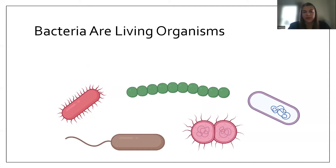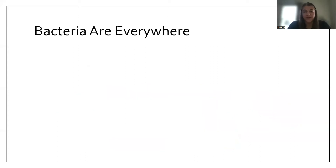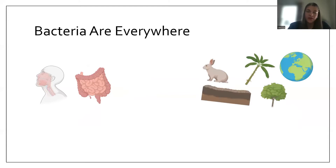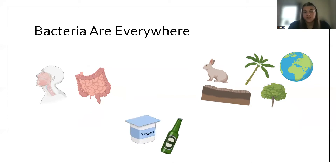Bacteria can be everywhere. They can live with and without oxygen, depending on the type, and some can live in really hot or cold temperatures. If you look at your hands or skin, bacteria are found there, as well as in your mouth and stomach — they make up something called the gut microbiome. They're found in plants, animals, the soil, and even in our oceans where they produce a huge amount of oxygen. Bacteria are also vital for producing different foods such as cheese and yogurt, and have been important for discovering medications such as antibiotics.